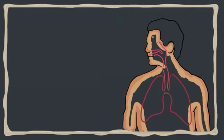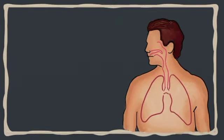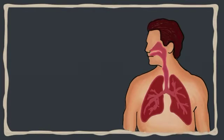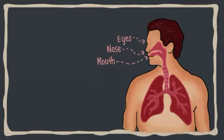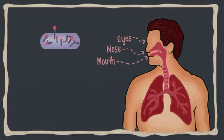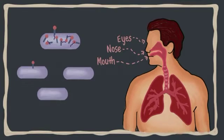The virus usually enters through your nose, mouth, or eyes. It infects the cell by getting into a living cell and replicating there. The infected cell eventually dies and releases virus particles, which in turn infect other cells.